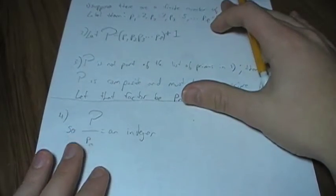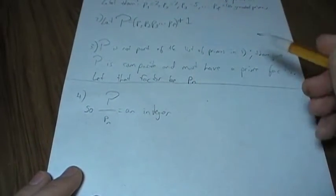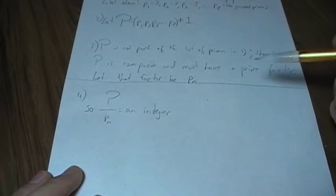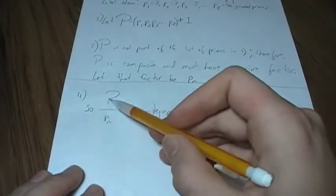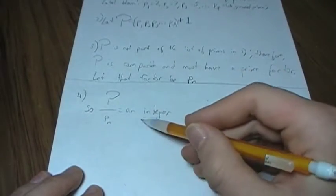Some prime. We don't know what it is. Okay, so since P has the prime factor P sub n, that must mean it's divisible. So, P over P sub n is an integer.